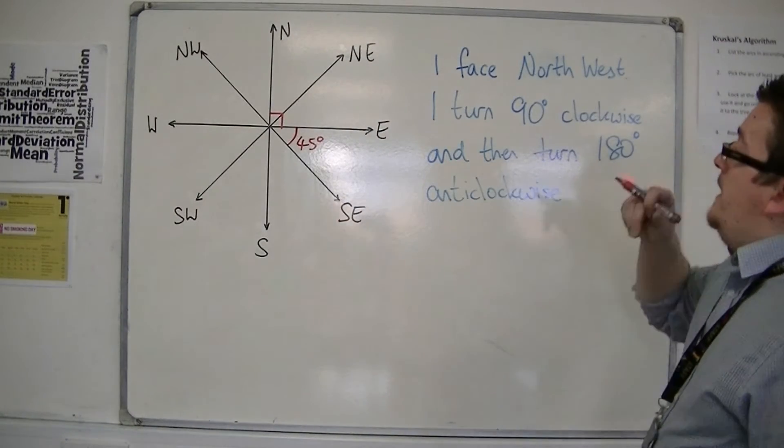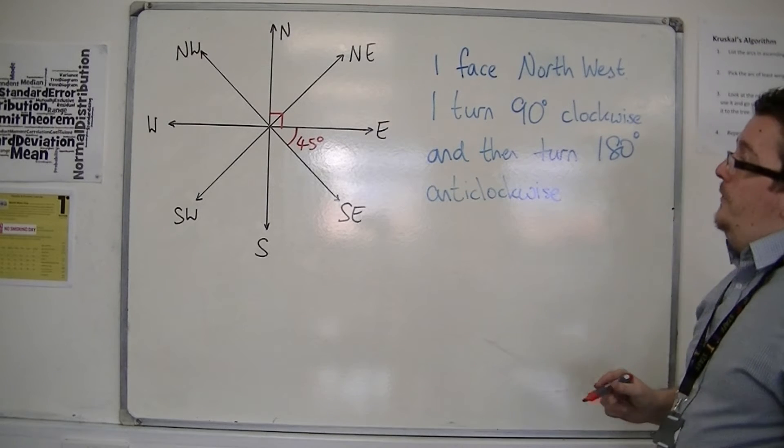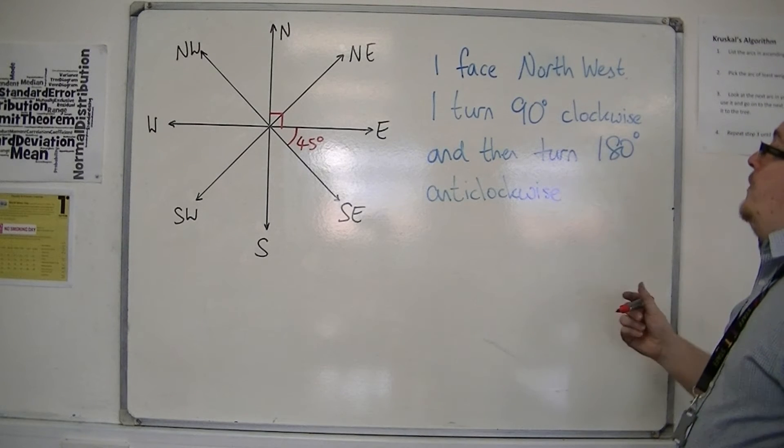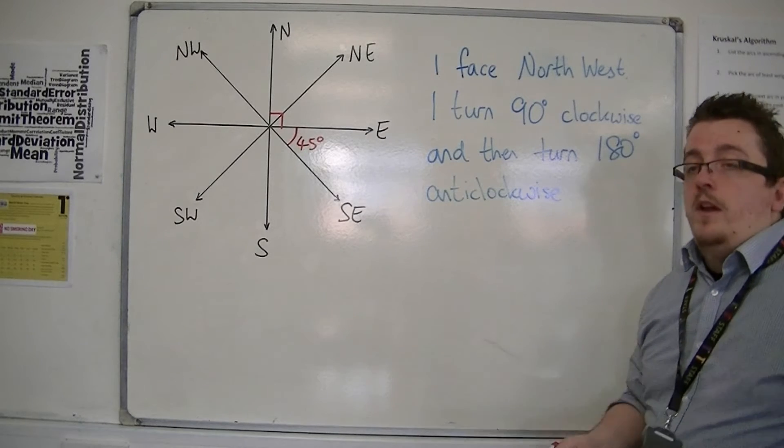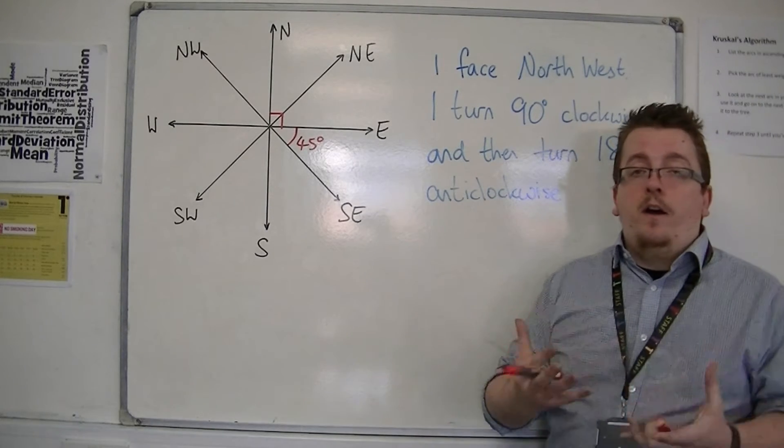So let's say I'm facing north-west. I turn 90 degrees clockwise and then turn 180 degrees anti-clockwise. In which direction am I now pointing?